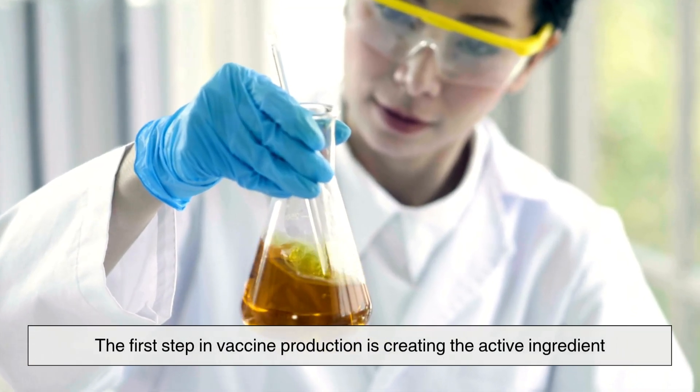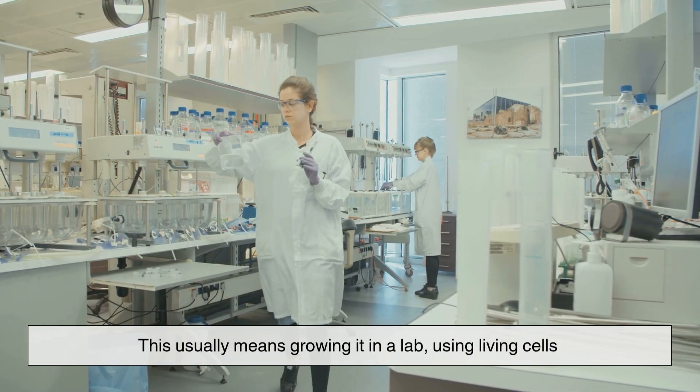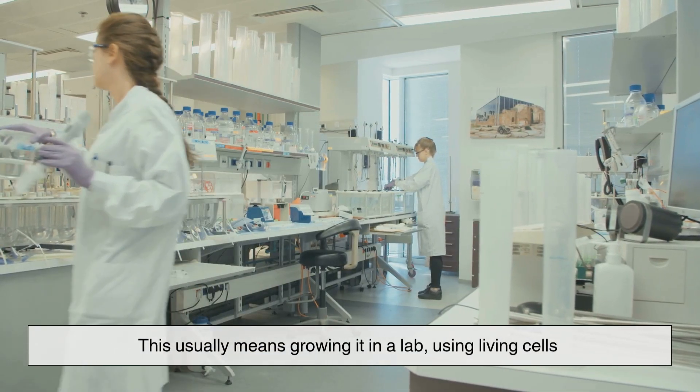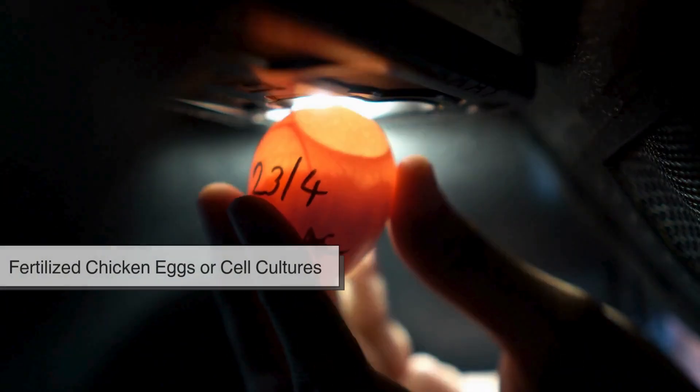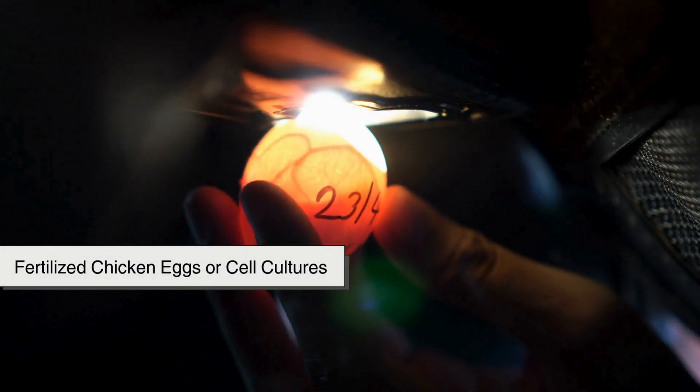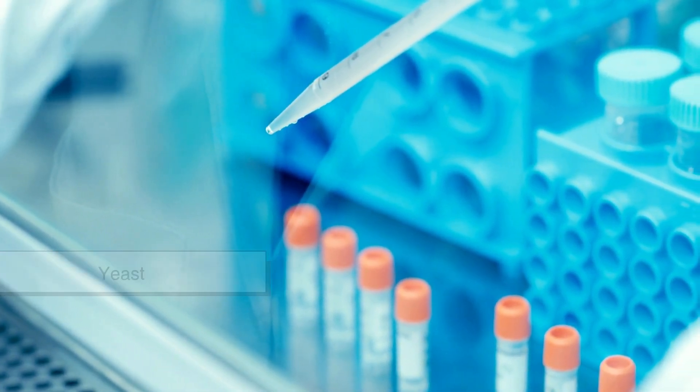The first step in vaccine production is creating the active ingredient. This usually means growing it in a lab, using living cells. For some vaccines, this involves growing viruses in fertilized chicken eggs or cell cultures. Others use bacteria or yeast to produce proteins.